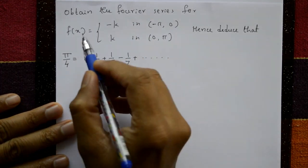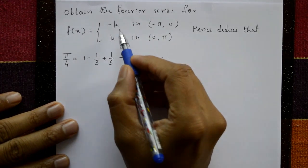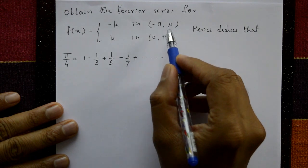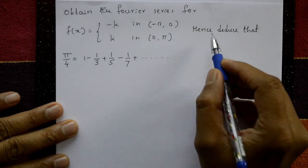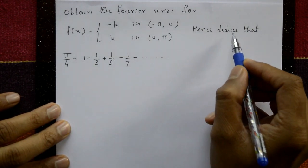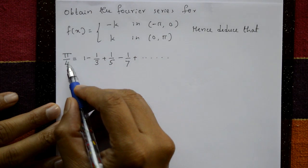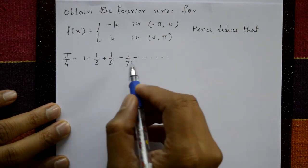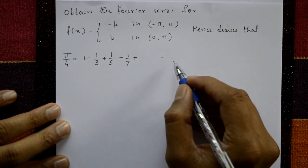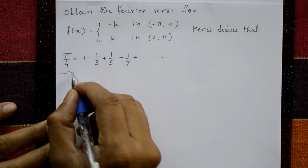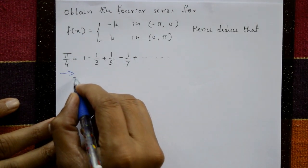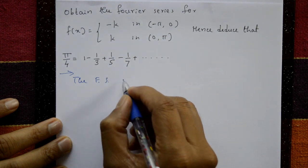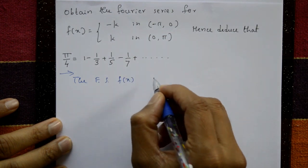Obtain the Fourier series for f(x) given as minus k in minus π to 0, plus k from 0 to π. Hence deduce that π/4 is equal to 1 minus 1/3 plus 1/5 minus 1/7 plus so on. We require this series.